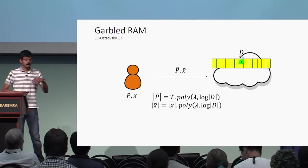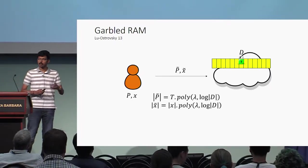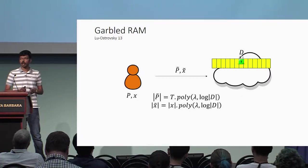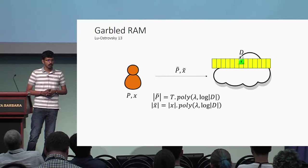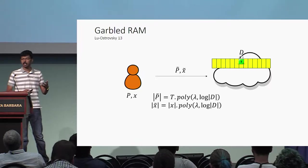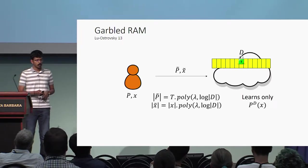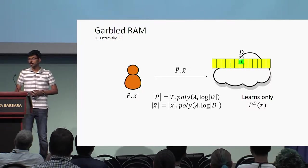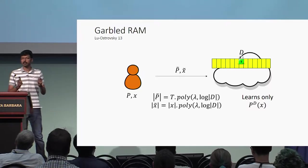Garbled RAM requires that the size of the garbled program P-tilde only grow with the running time of the original program times some polynomial factor in the security parameter and some polylogarithmic factor in the size of the database. Similarly, it requires that the size of the garbled input only grow with the size of the original input times similar factors. For security, we require that the cloud provider who gets P-tilde, X-tilde, and the encrypted database only learns the output; everything else about the database, the program, and the input is hidden.